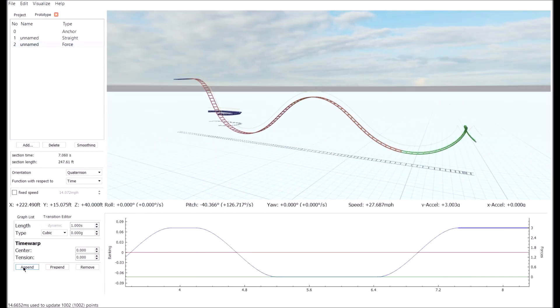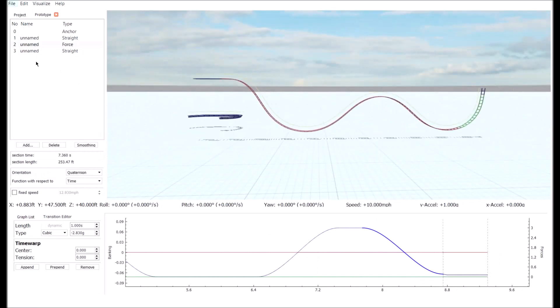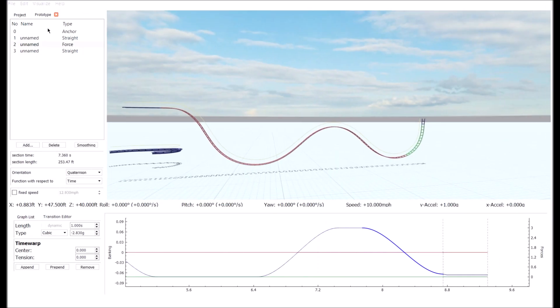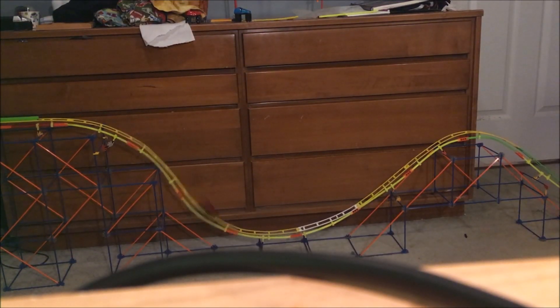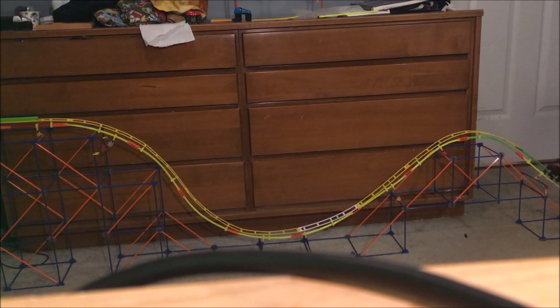As much as I wanted to make a big coaster right away, I wanted to make sure my physics were correct, so I made a simple prototype. I made a spine on the track to give it extra strength, and I built it shortly after, and it worked just as designed.